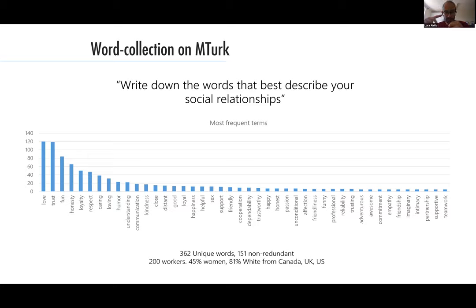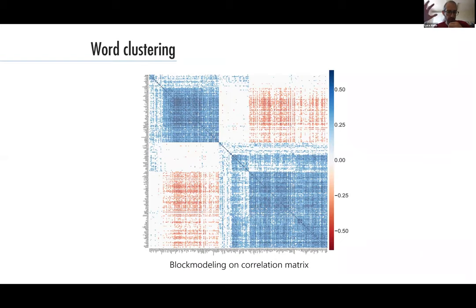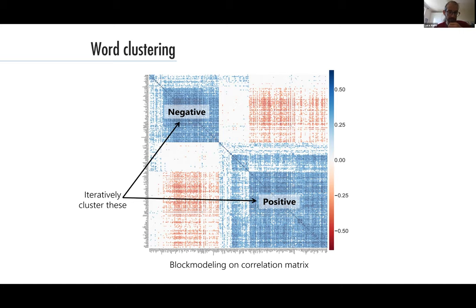This is already very telling about what people care about and how they conceptualize social relationships. But the data is very sparse. So we asked crowdsourcers to pair these concepts by similarity, built a similarity matrix, and then clustered it in blocks putting semantically related words close together. Here you can see two main blocks of negative and positive concepts, and then you can iteratively cluster these macro-clusters to get more fine-grained ones.